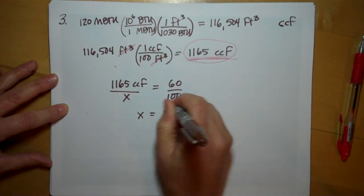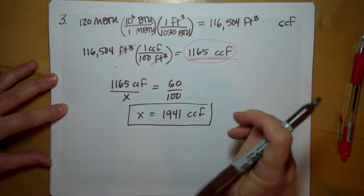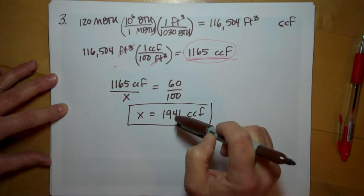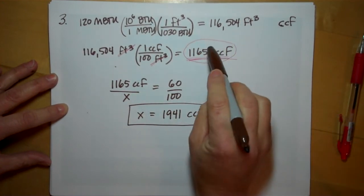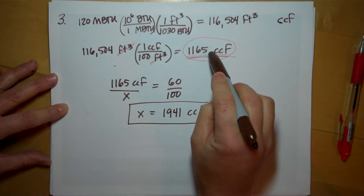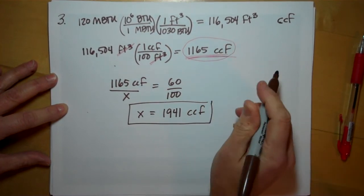That's how much natural gas we actually have to purchase. We have to purchase this much so that 40% can be lost and we end up with only having this to produce the heat in the house.